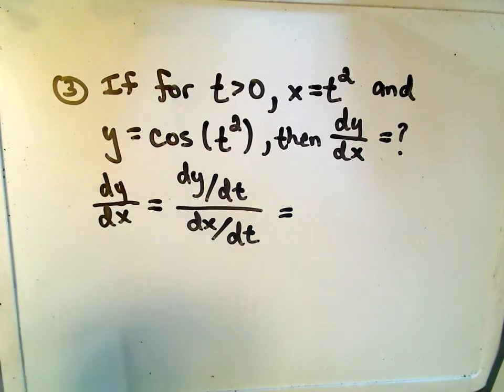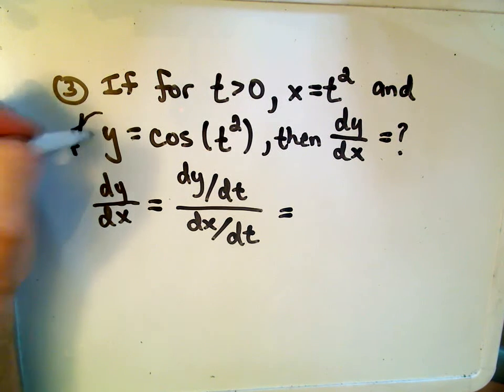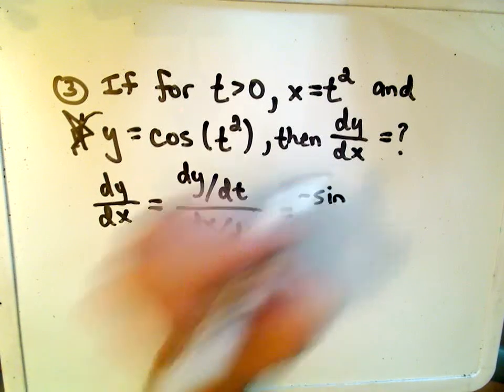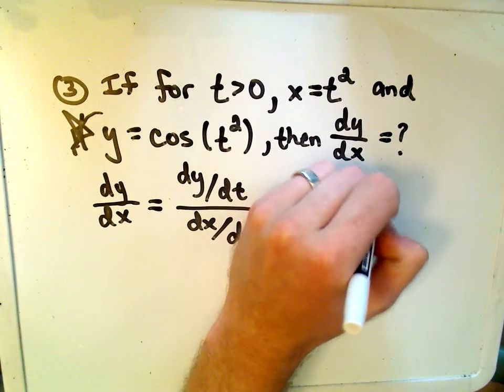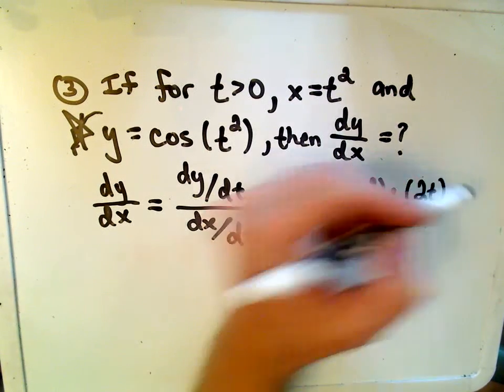So, nothing too hard here. If we take the derivative of the y part with respect to t, the derivative of the outside will be negative sine. We leave the inside alone, t squared, but then we have to multiply by the derivative of the inside, so we'll have to multiply by 2t.